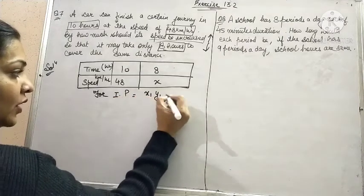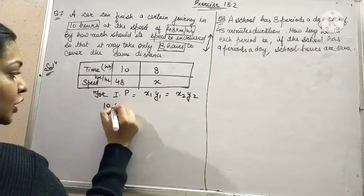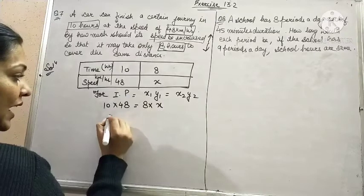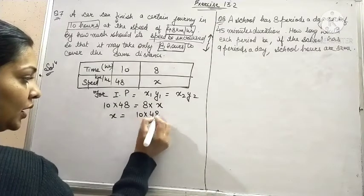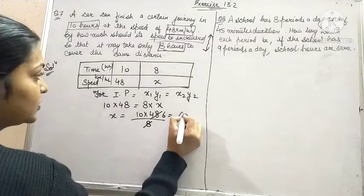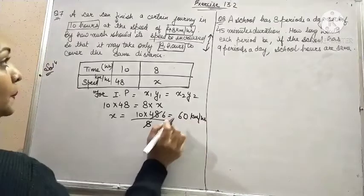For inverse proportion, we have X1·Y1 is equal to X2·Y2. Substitute the values. 10 times 48 is equal to 8 times X. Now X will be equal to 10 into 48 upon 8. It will be equal to 60. So speed will be 60 km per hour.